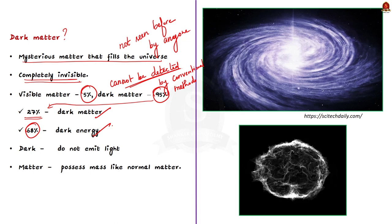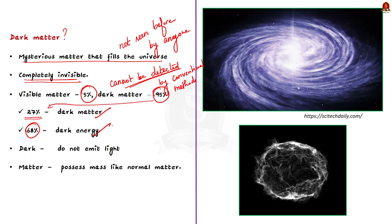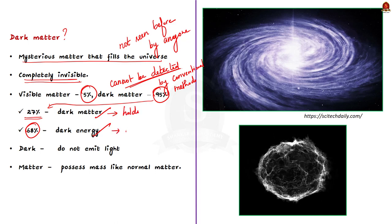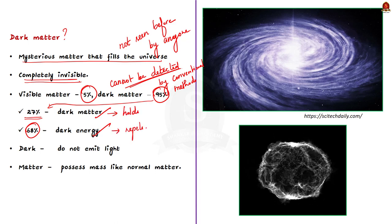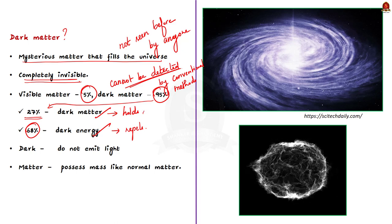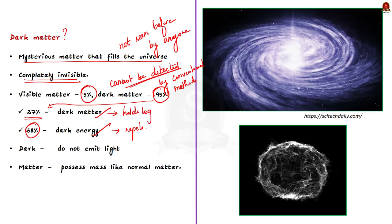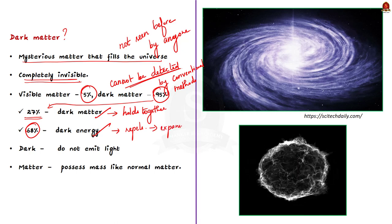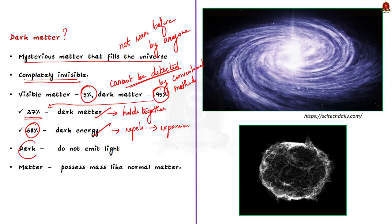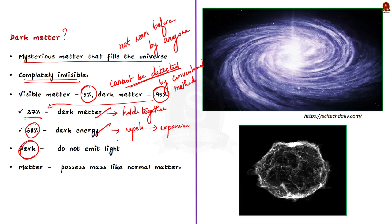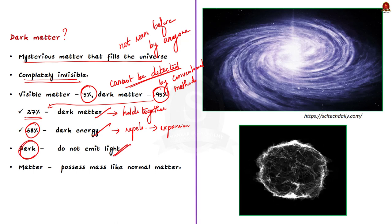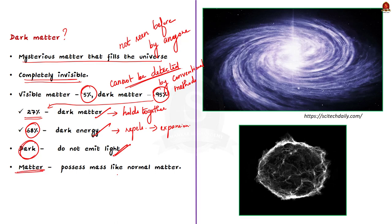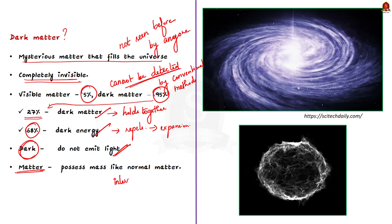Dark matter attracts and holds galaxies together, while dark energy repels and causes the expansion of our universe. These particles are called 'dark' because they do not emit light, and they are called 'matter' because they possess mass like any other normal matter and interact through gravity.